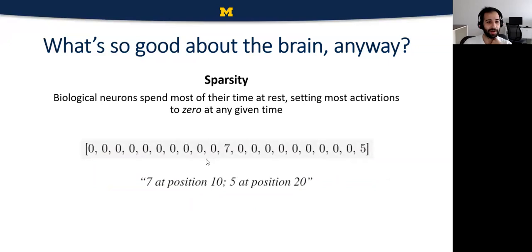The second S is sparsity. Biological neurons spend most of their time at rest, setting most activations to be zero at any given time. It's incredibly inefficient to read out a vector of zeros and sevens by saying zero, zero, zero, seven. It's far more efficient to describe it by saying we have a seven at position 10 and a five at position 20. The advantage of this data structure is that memory is only going to increase as the number of non-zero elements increases. That's another really nice computational advantage of how neurons communicate.